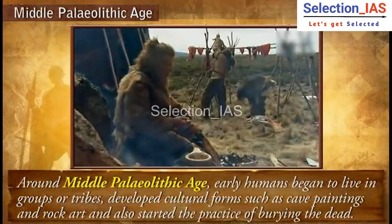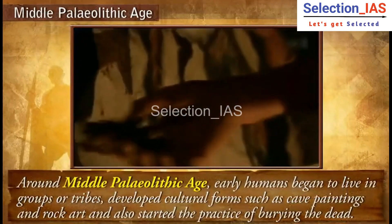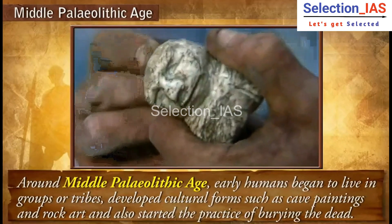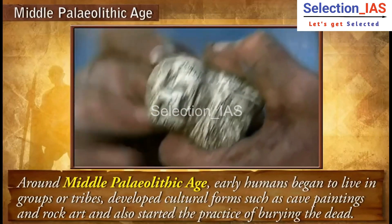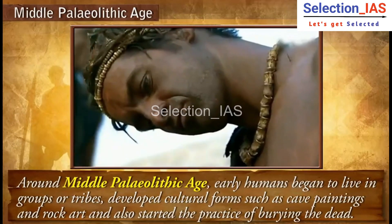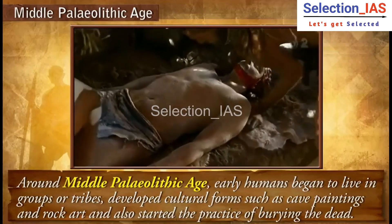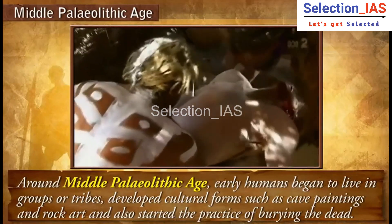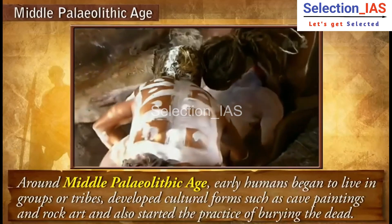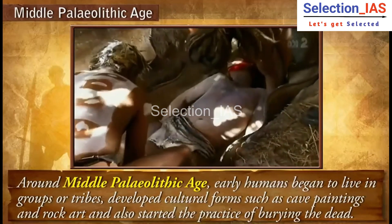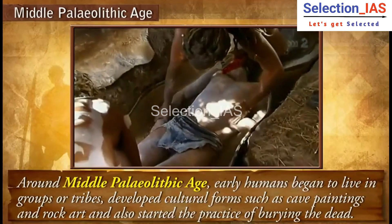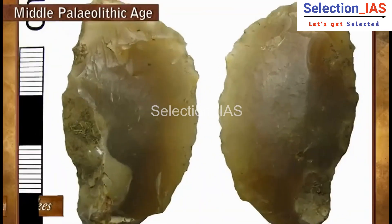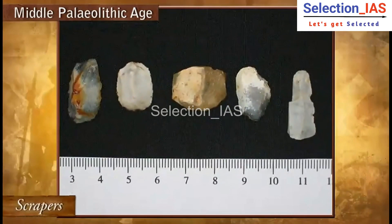Around the Middle Paleolithic Age, early humans began to live in groups or tribes. They developed cultural forms such as cave paintings and rock art, and also started the practice of burying the dead. Tools used in the Middle Paleolithic Age were flakes, scrapers, and borers.